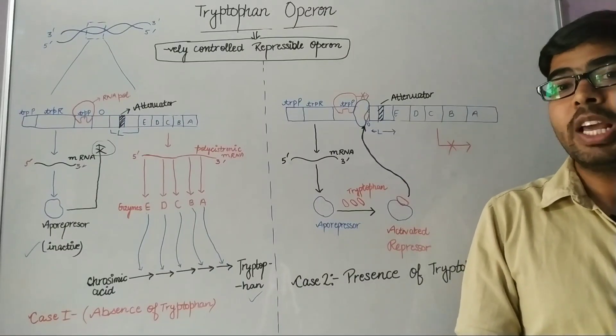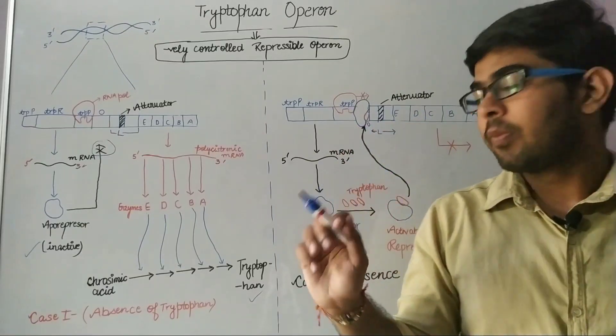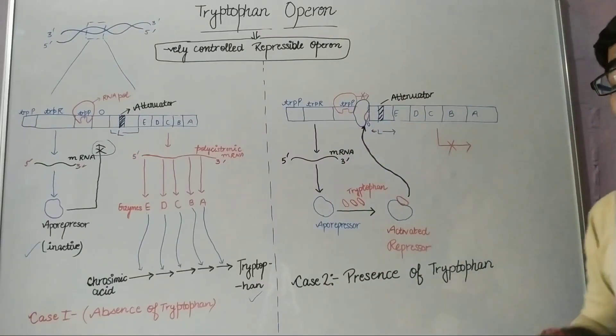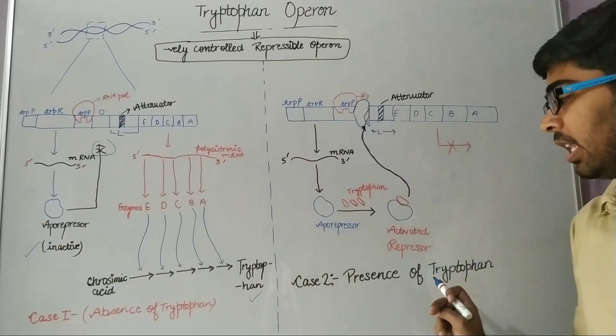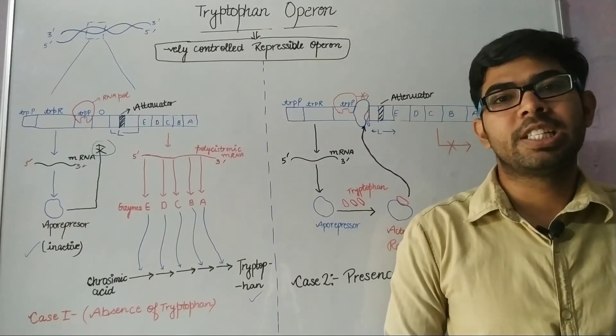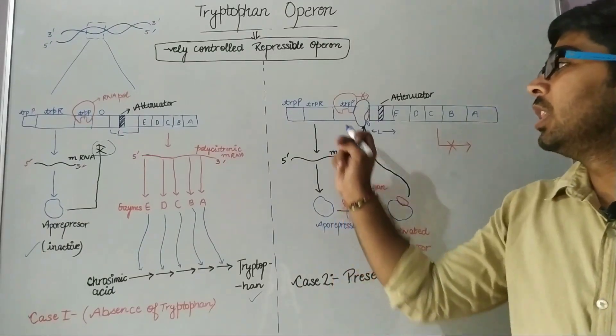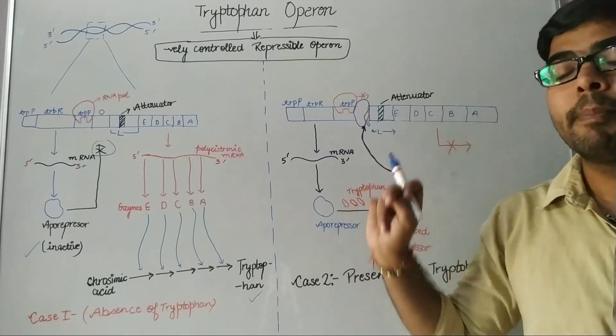And E. coli can carry out all its essential functions. The second case is when tryptophan is present in the cytoplasm of E. coli. Then it will not require any tryptophan to be synthesized.